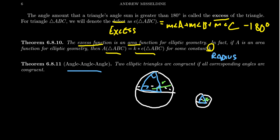An immediate consequence of the excess function being additive is that in elliptic geometry we get the angle-angle-angle (AAA) triangle congruence condition: if three angles are congruent, the two triangles are congruent. This shows that similar triangles don't exist in elliptic geometry, just as in hyperbolic geometry. The proof is the same as for hyperbolic AAA — just switch from defect to excess — using the additivity axiom. On the other hand, the angle-angle-side (AAS) condition fails in elliptic geometry.